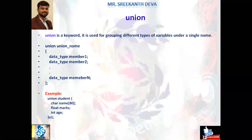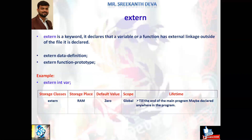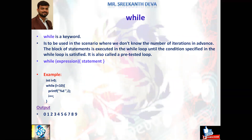Generally, the four storage class keywords are auto, register, static, and extern. Coming to looping topics in C programming, the while keyword is used in looping statements. It is used in scenarios where we do not know the number of iterations in advance. The block of statements is executed in the while loop until the condition specified is satisfied. It is also called a pre-tested loop.